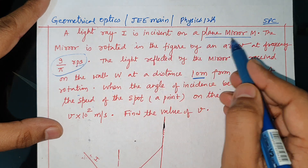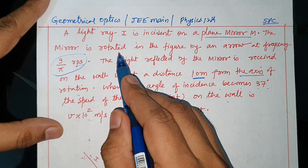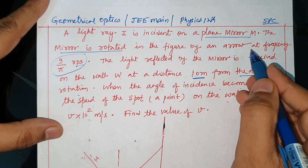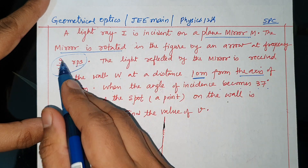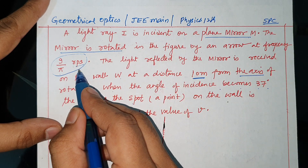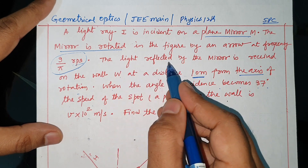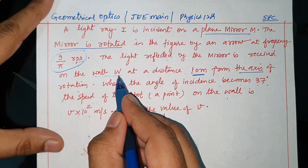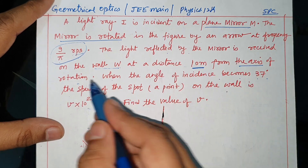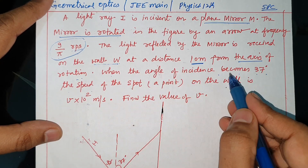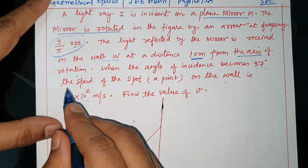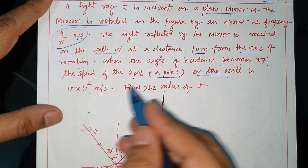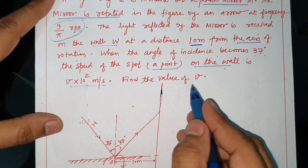A light ray is incident on a plane mirror. The mirror is rotated, as shown in the figure by an arrow, at a frequency of 9/π revolutions per second. The light reflected by the mirror is received on a wall at a distance of 10 meters from the axis of rotation. When the angle of incidence becomes 37 degrees, the speed of the spot on the wall is V×10² meters per second. Find the value of V.